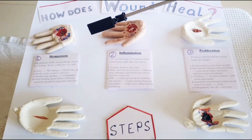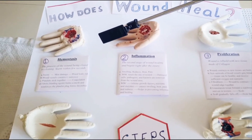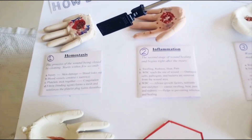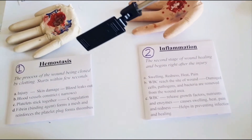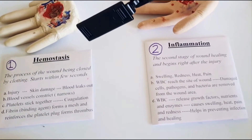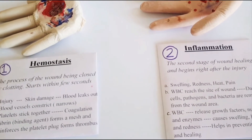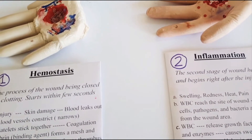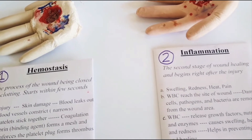The first step of wound healing is hemostasis. This is the process in which the wound is closed and blood stops leaking by platelets clotting with fibrin. As shown here in the model, the brown particles represent the platelets clotting with fibrin.